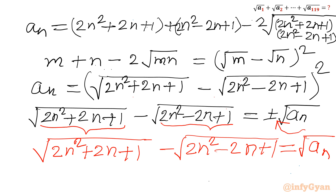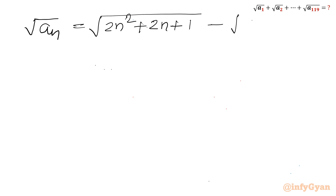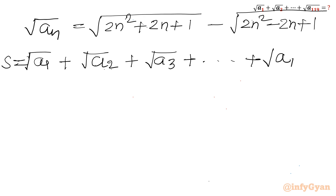Now I write the required sum: √a₁ + √a₂ + √a₃ + … + √a₁₁₉. Plugging in n = 1: √a₁ = √(2 + 2 + 1) − √(2 − 2 + 1) = √5 − √1. For n = 2: √a₂ = √13 − √5. For n = 3: √a₃ = √25 − √13. And so on as a telescoping series.